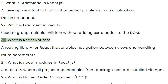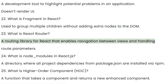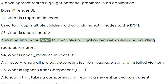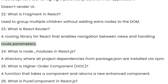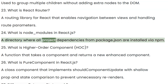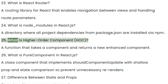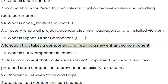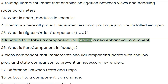Question 23: What is React Router? A routing library for React that enables navigation between views and handling route parameters. Question 24: What is node_modules in React.js? A directory where all project dependencies from package.json are installed via NPM. Question 25: What is a Higher-Order Component? A function that takes a component and returns a new enhanced component.